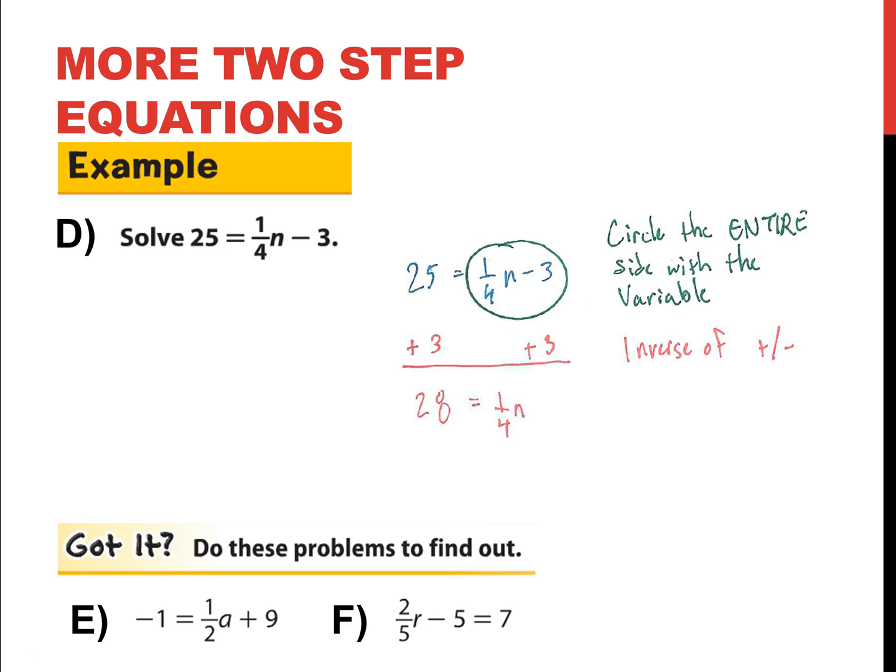And this is like the other equations in the previous video as well. I multiply times the reciprocal because now that is dividing with a fraction. So multiply everything by the inverse of 1 fourth, which is just 4. And that is 112. 28 times 4 is 112. That equals n.